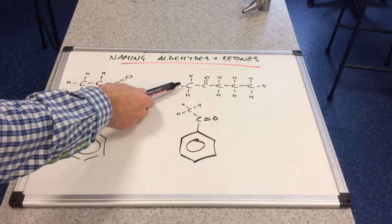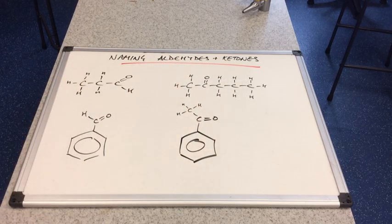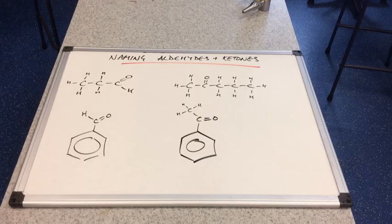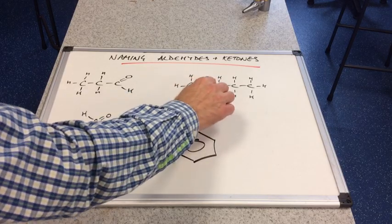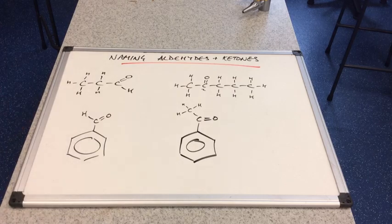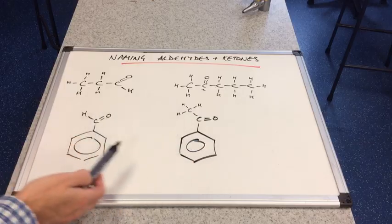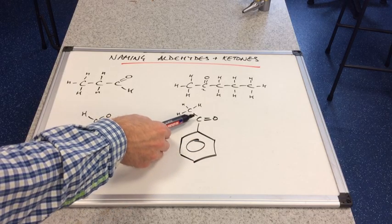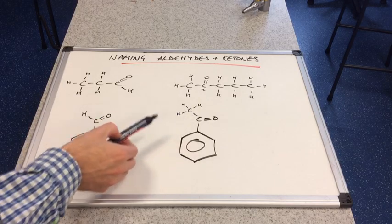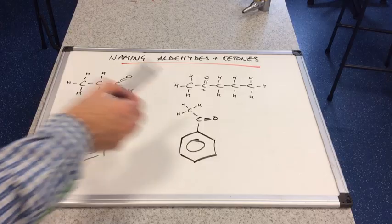This one here is a ketone with five carbons. So it's going to be pentanone. But we must say where the carbonyl group is - it's position two. So it would be called pentan-2-one. The most difficult one to name is this one. We've got that phenyl group again on a ketone two carbons long. So we're going to call this phenyl ethanone.